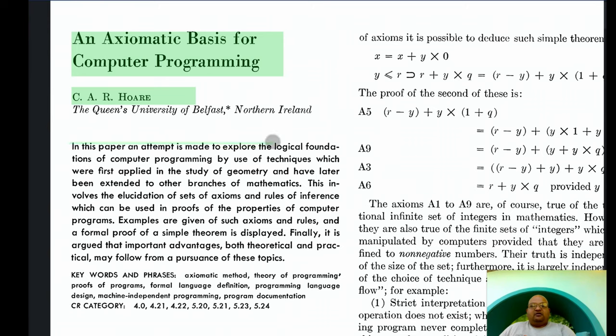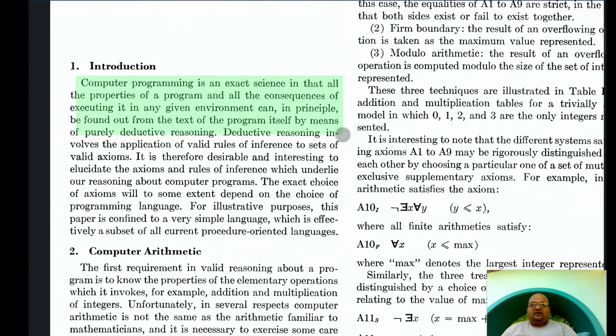And the approach Hoare takes in this paper is to underpin programming with mathematical logic. He proposes a set of axioms and rules of inference which can operate on top of those axioms to prove programs correct. In theory, computer programming is an exact science in that we should be able to logically deduce the state of our environment from the text of the program itself. And in order to do that, we should first specify what axioms we're using and what rules of inference we can use to build up on top of those axioms to prove our programs correct.